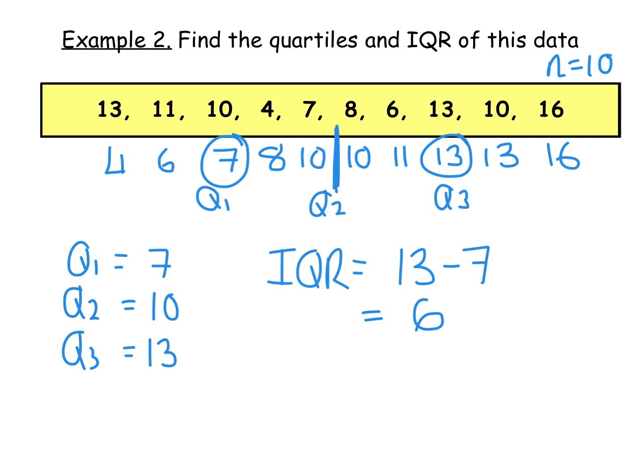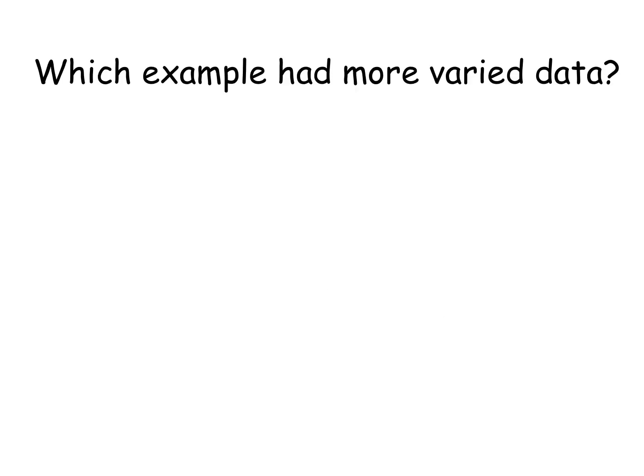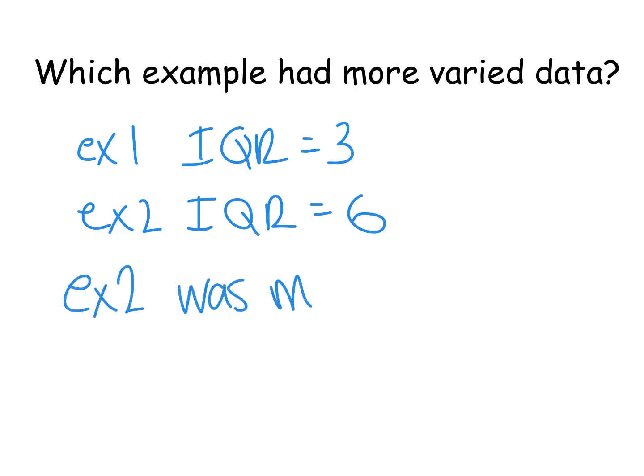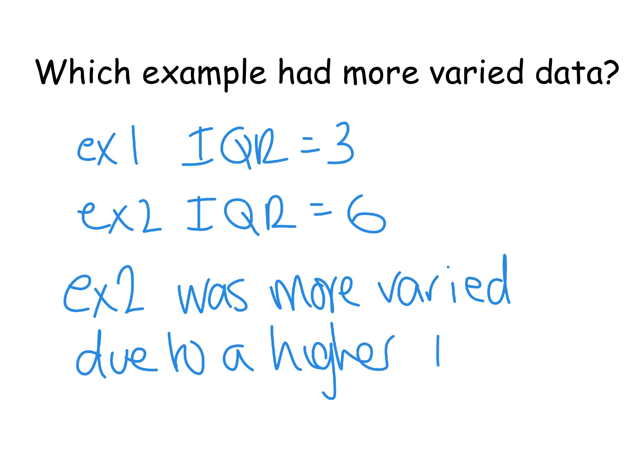I've now got two examples there. My first example had an interquartile range of 3. My second example had an interquartile range of 6. So what does that mean? Which example was more varied? Just remind example 1, the IQR was 3. Example 2, the IQR was 6. Remember, the bigger this number, the bigger the range of the data. So we're going to write a little sentence. We're going to say example 2 was more varied. So more varied is just another way of saying your numbers are more spread out. There's bigger gaps between them all. Was more varied due to a higher interquartile range.